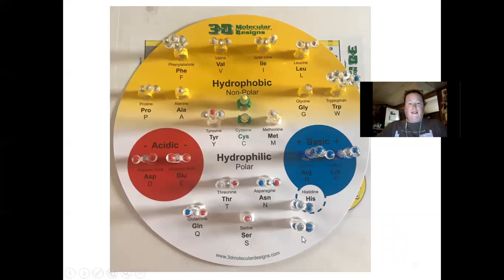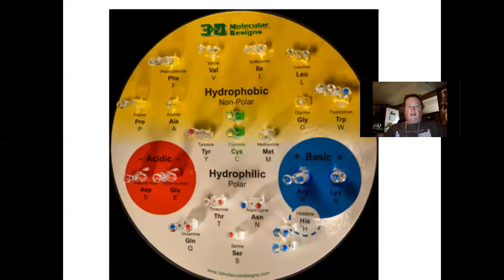These hydrophilic polar chains are overall neutral, but they have some regions of charge because of unequal sharing — polarity occurring within the molecule.